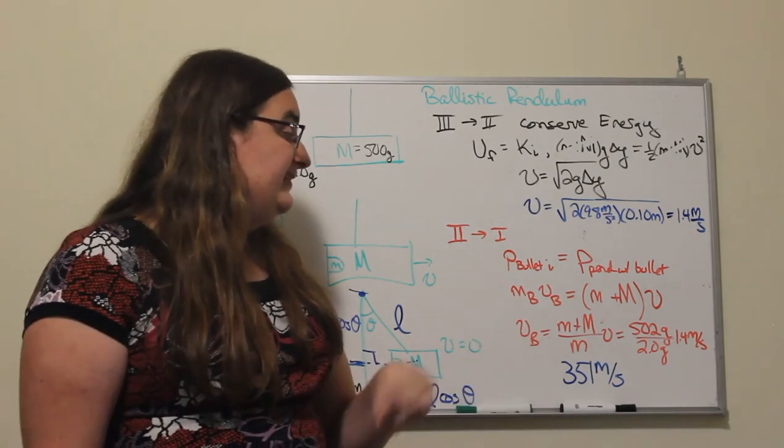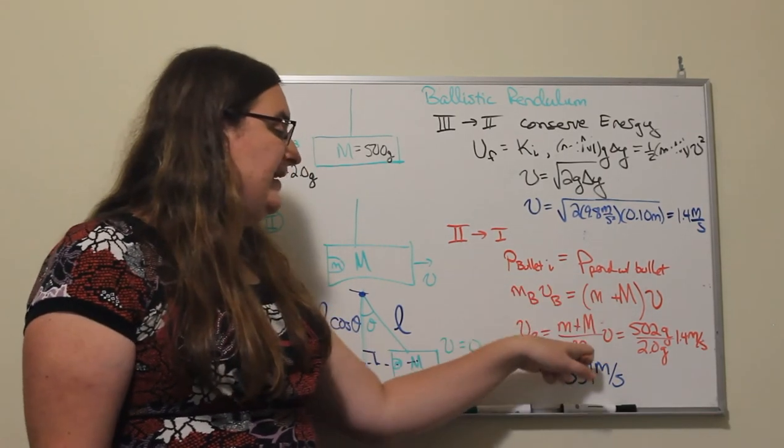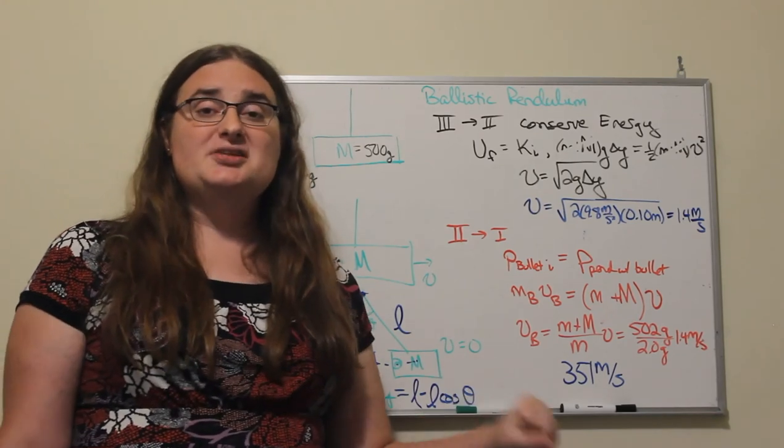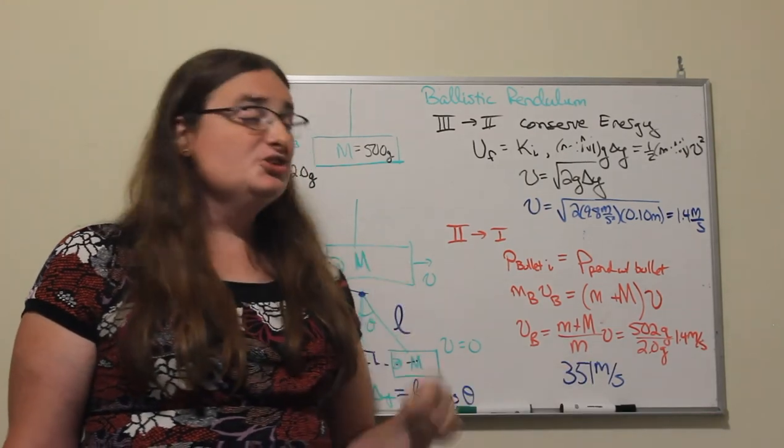So that means then that the speed of the projectile is going to be the total mass divided by the mass of the projectile times the speed of the pendulum.